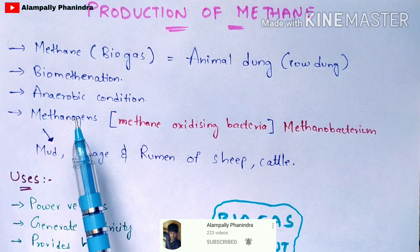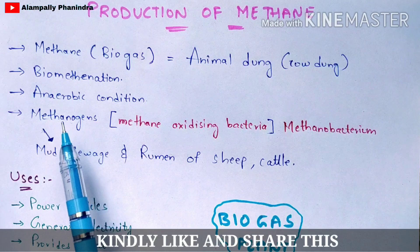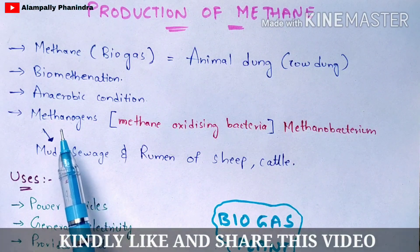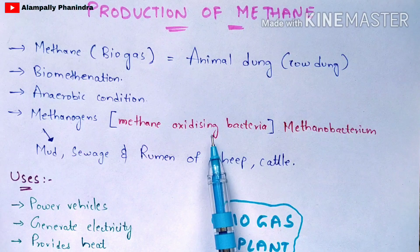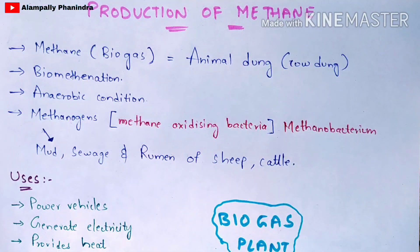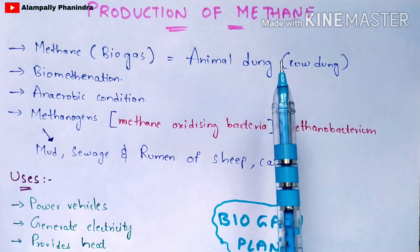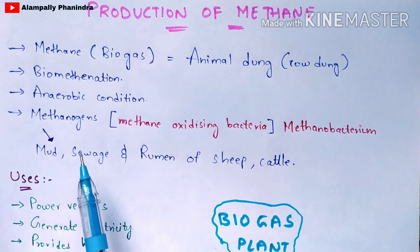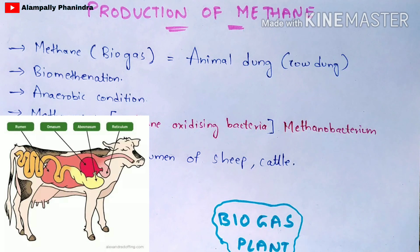The bacteria mainly responsible for the production of methane are methanogens, which are also called methane-oxidizing bacteria or methanobacterium. These methanogens can be found not only in cow dung but also in mud, sewage, and the rumen of sheep and cattle.